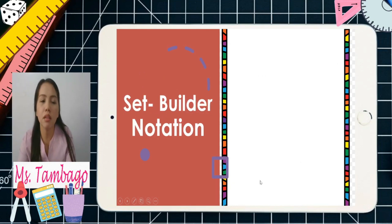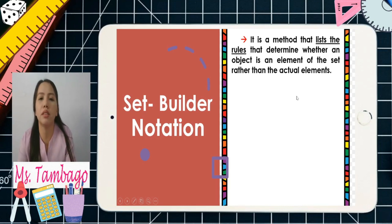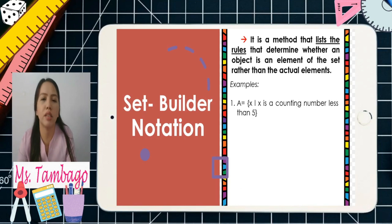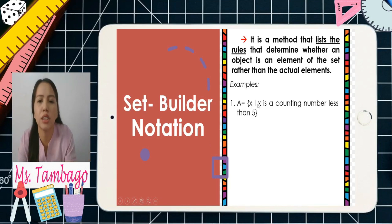The last method is set builder notation. It is a method that lists the rules that determine whether an object is an element of the set, rather than the actual elements. For example, going back to our sets, we write: capital A equals open brace...